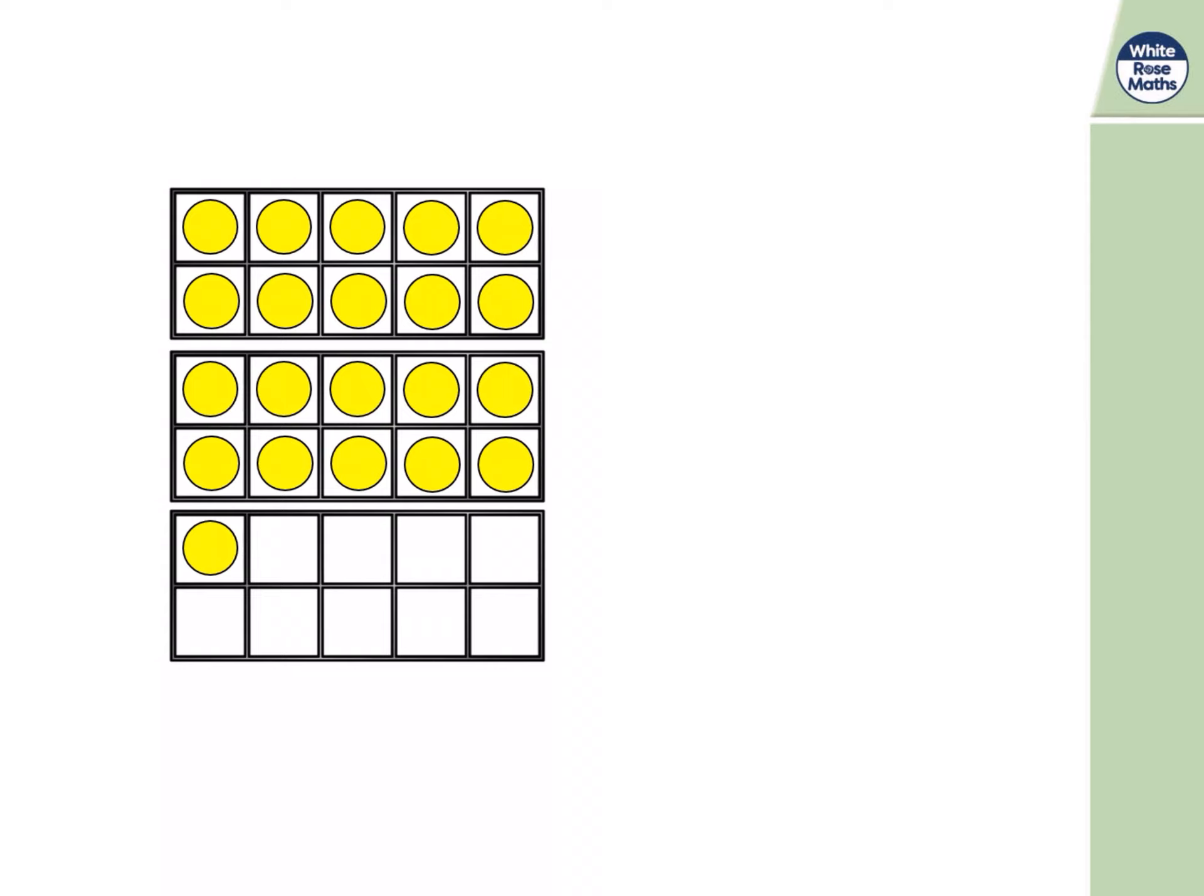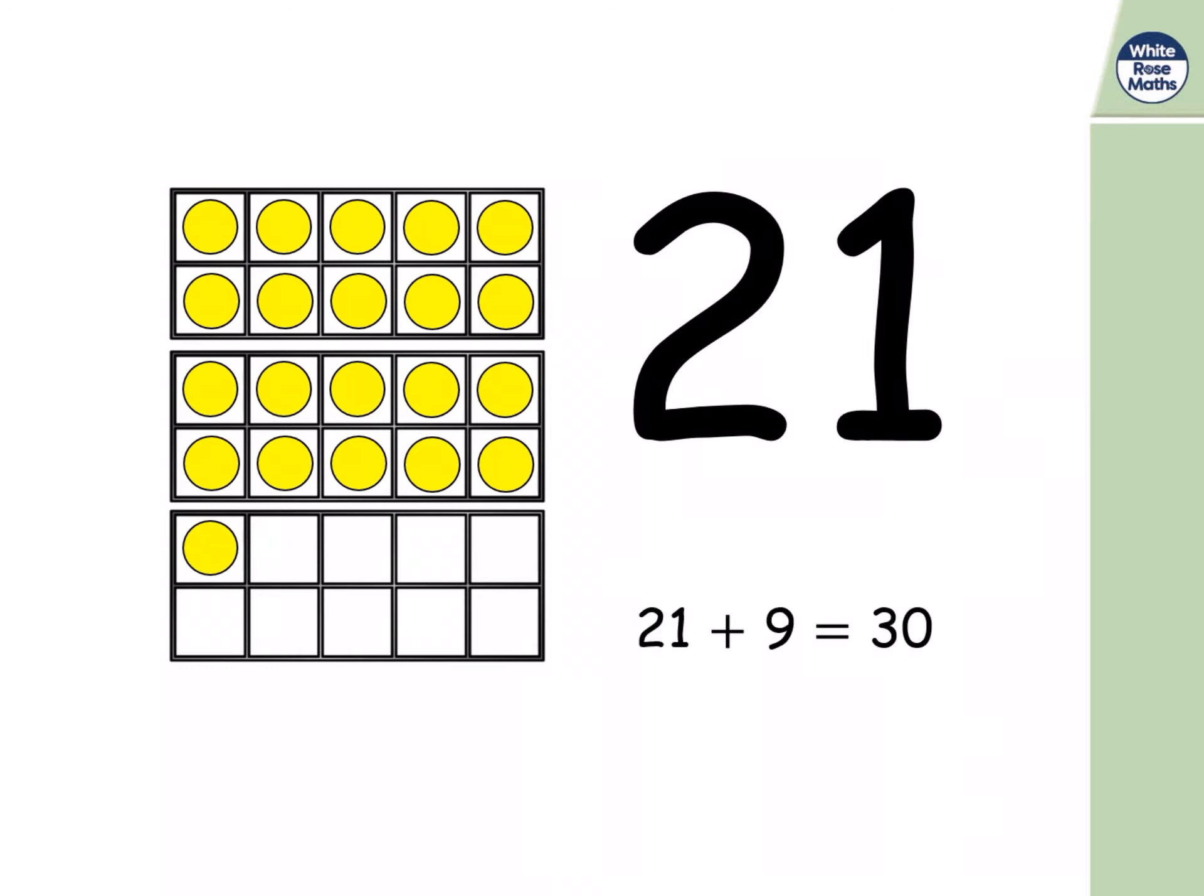Up to thirty this time. And I've got one in that final ten frame, so it must be nine, right? Yes, twenty one add nine is thirty. One plus nine is equal to ten, eleven plus nine is equal to twenty, and twenty one plus nine is equal to thirty. Can you see the pattern there? Where the ones is one, the bond is always nine.